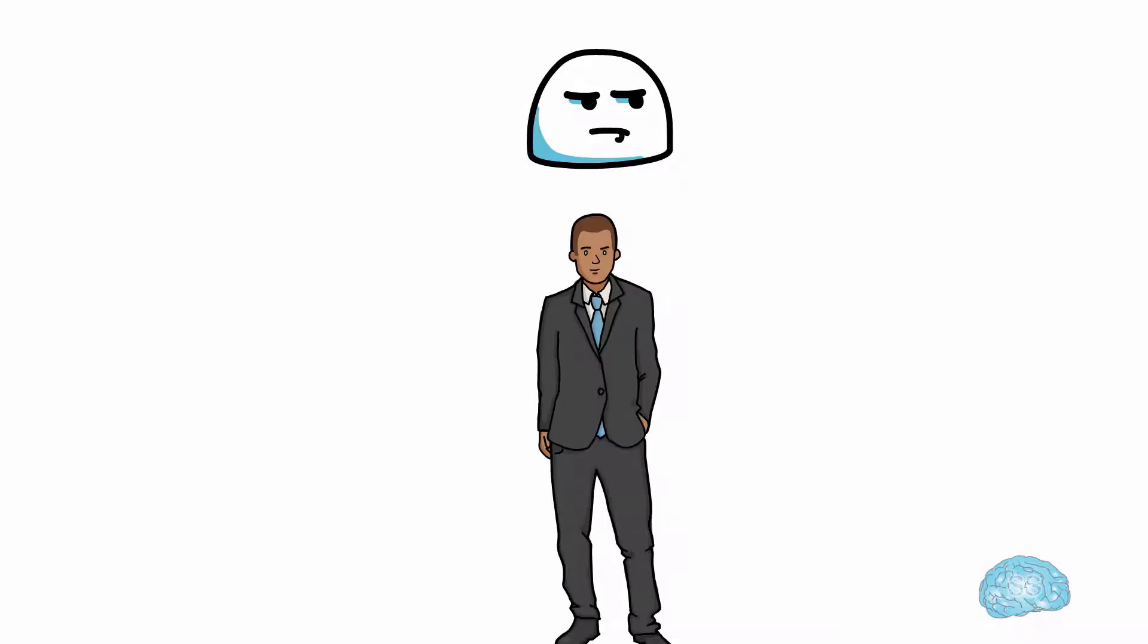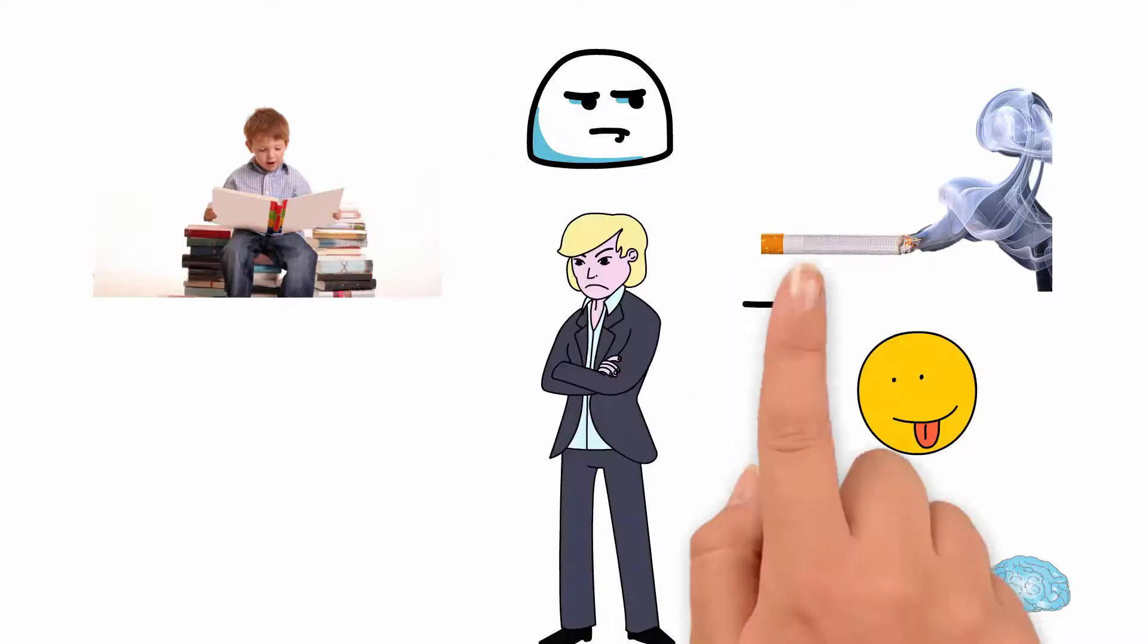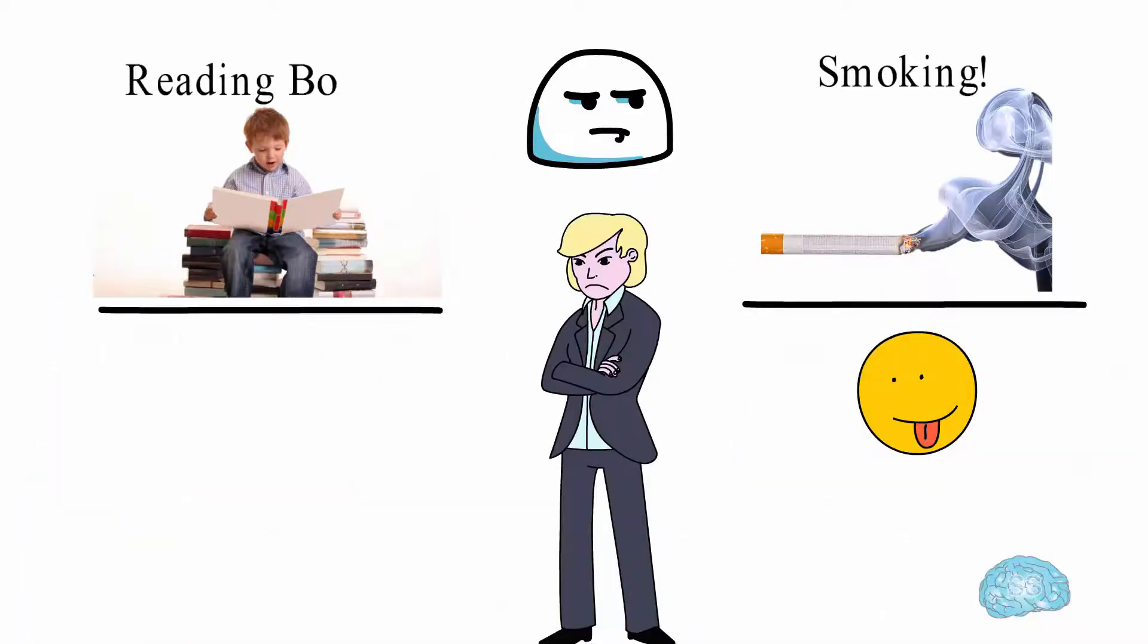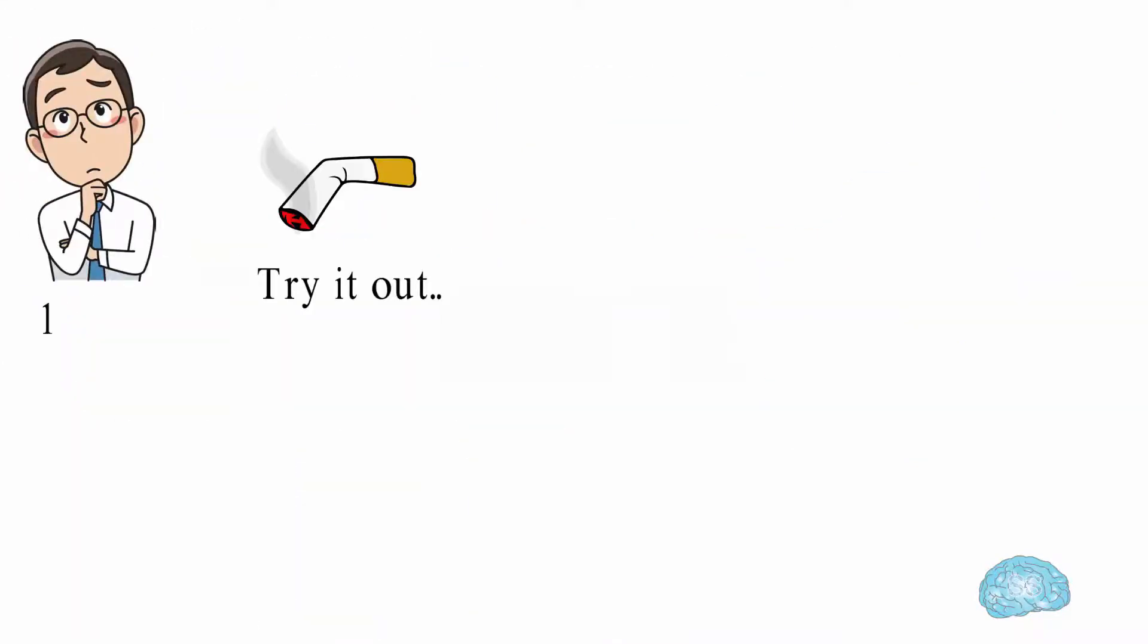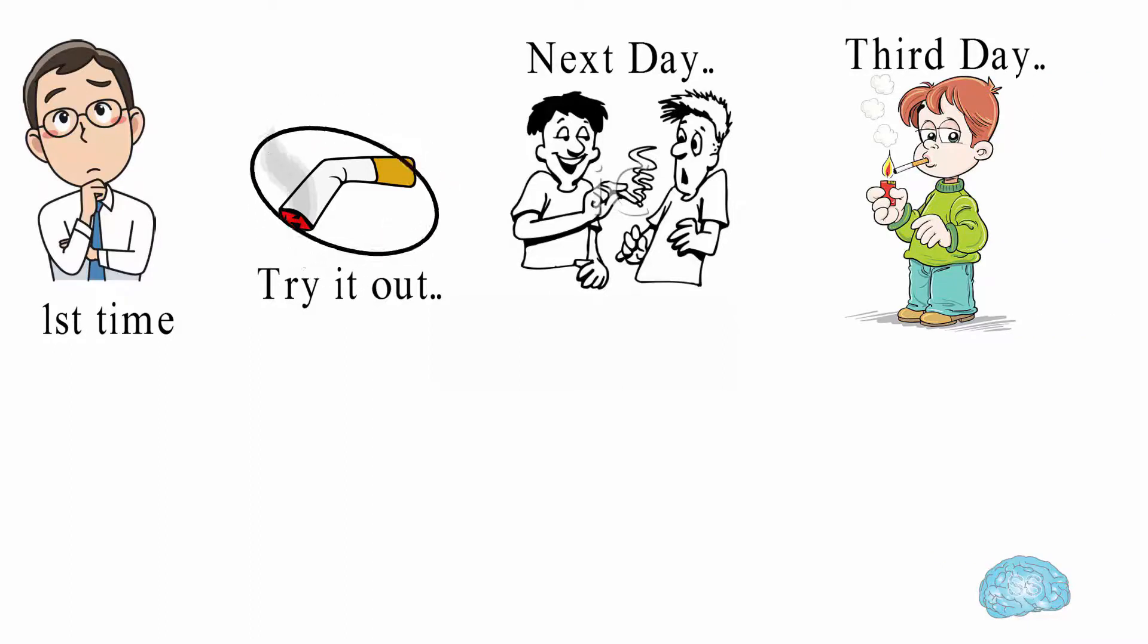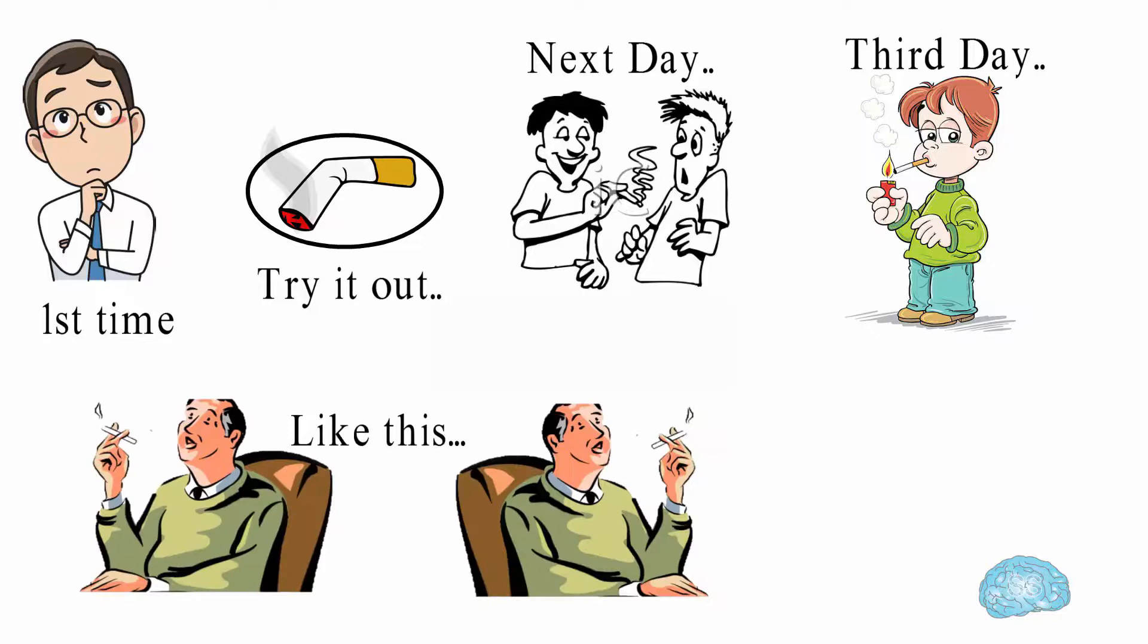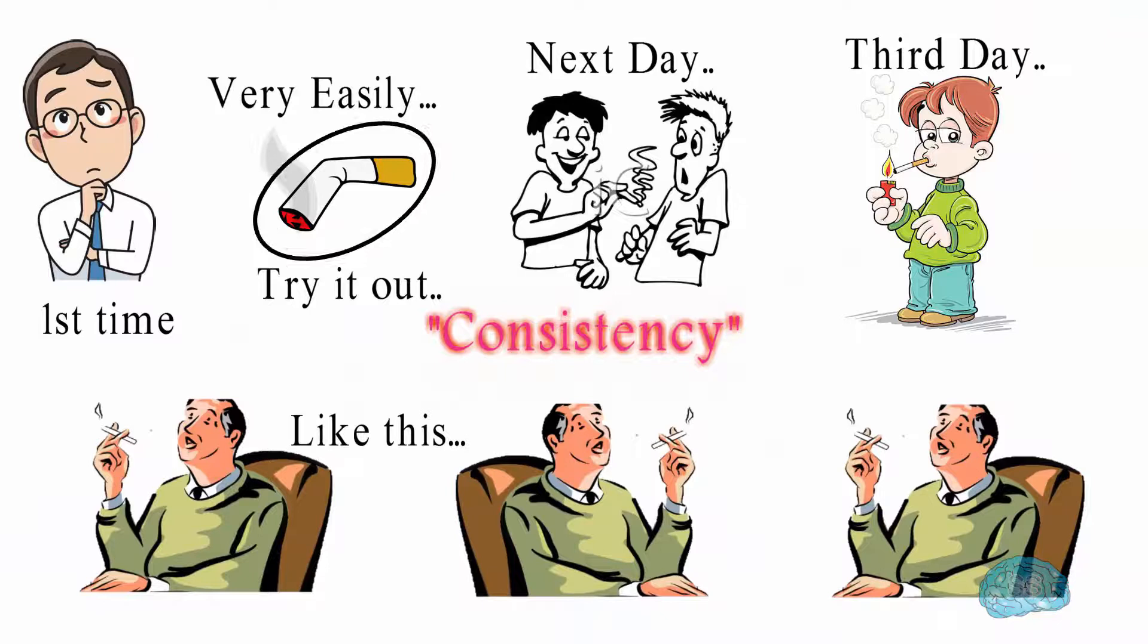Have you ever noticed why a person starts a bad habit very easily as compared to a good habit? Why a person can easily start a smoking habit but not a habit of reading books? Think of it. A person tries a smoke for the first time. The next day, his friends provoke him to smoke another one. The third day, he thinks one smoke won't affect much. Like this, he consistently smokes every day. Because of this consistency, he easily forms a smoking habit.